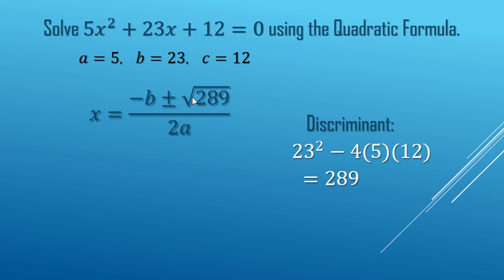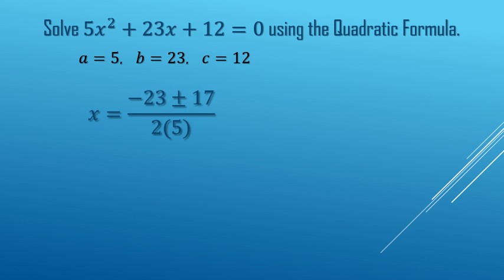Now the square root of 289 is 17, b is 23, and the a is 5. So we can go ahead and replace those values there.